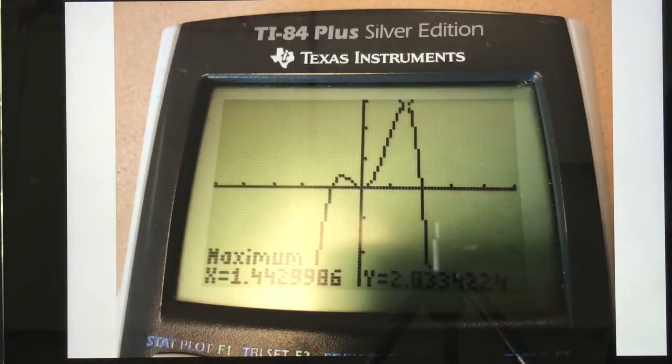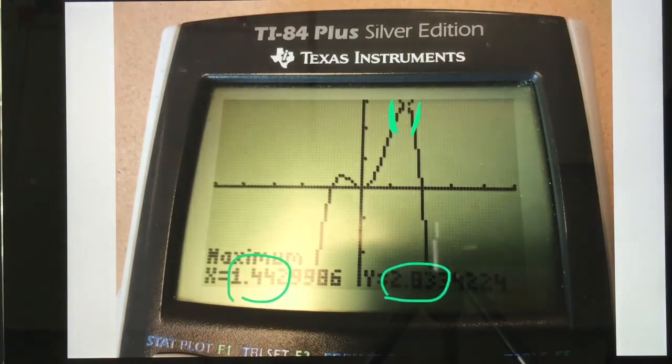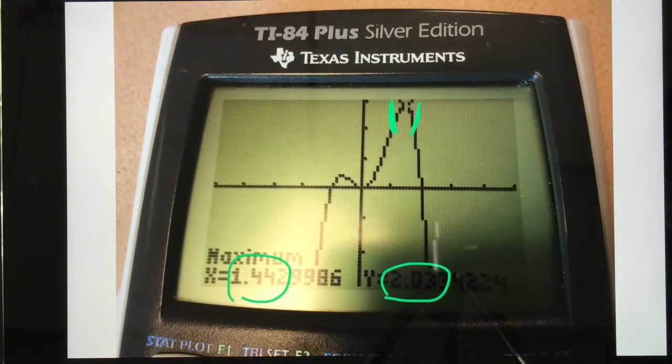Then I went ahead and I found my last maximum. So I did left bound and right bound. And I'm going to take my three decimals. So 1.443 because the 2 is followed by a 9 and 2.833.